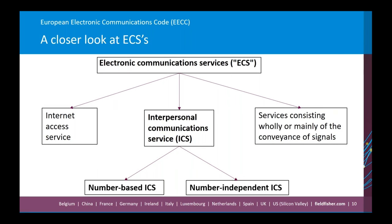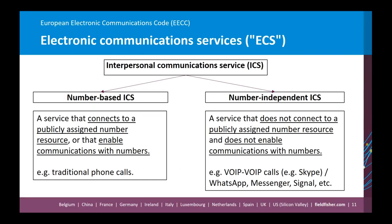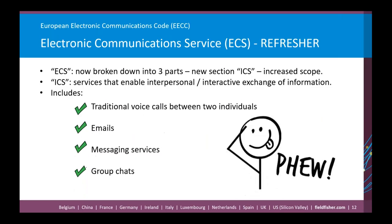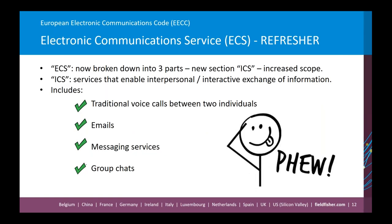To summarise before handing to Amy for worked examples: we have a broadened definition of ECS with three categories, and in particular the introduction of ICS — interpersonal communication services — which enable interactive and interpersonal exchanges of information. This means services including email, messaging apps, VoIP, group chats, and similar services are now caught by the definition.